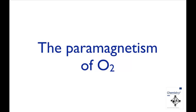In this screencast we're going to look at the bonding in the oxygen molecule O2 and use this to explain the fact that oxygen is paramagnetic. This means it's attracted to a magnet as a result of having unpaired electrons. We're going to use molecular orbital theory to construct a molecular orbital energy level diagram.